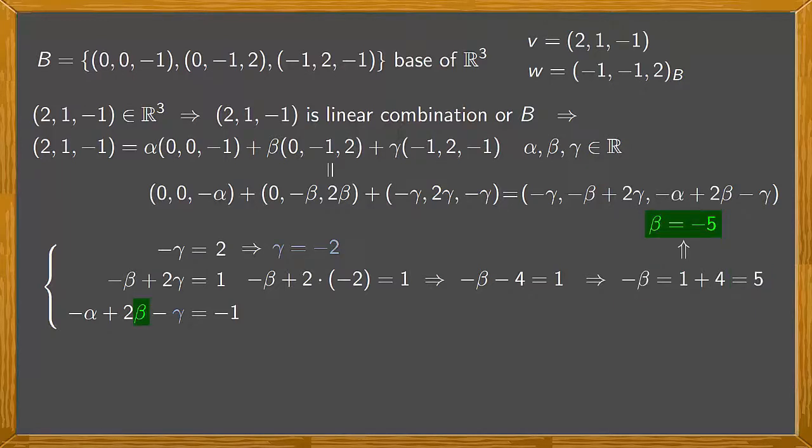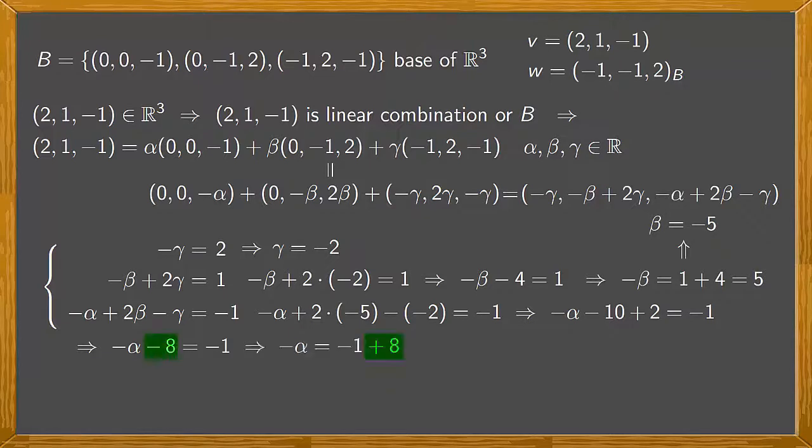We substitute γ equals -2 and β equals -5 in the third equation, and there it is. We work this out and get that -α + 2 times -5, which is -10, minus -2, which is plus 2, equals -1. So we have -α - 10 + 2, which is -8, equals -1. Therefore, -α equals -1 plus 8, which is 7. So α equals -7.